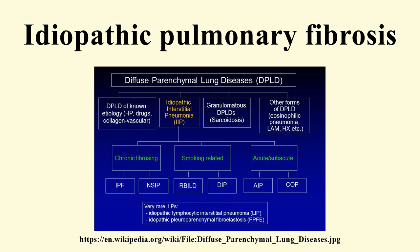Other environmental and occupational exposures — such as exposure to metal dust, wood dust, coal dust, silica, stone dust, biologic dust from hay, mold spores or other agricultural products, and occupations related to farming and livestock — have also been shown to increase the risk for IPF. There is some evidence that viral infections may be associated with idiopathic pulmonary fibrosis and other fibrotic lung diseases.